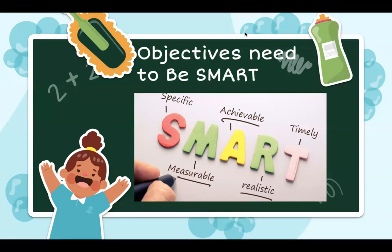The first element is Specific. A business should not just state they want to do 'something' vaguely. They should specifically state they want to increase profit, increase market share, grow, or survive. The objective must be clearly and specifically defined.